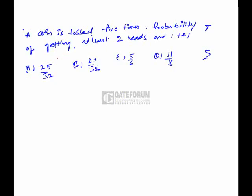A coin is tossed 5 times. We have to find the probability of getting at least 2 heads and 1 tail. So let us first write the combinations of at least 2 heads and 1 tail.